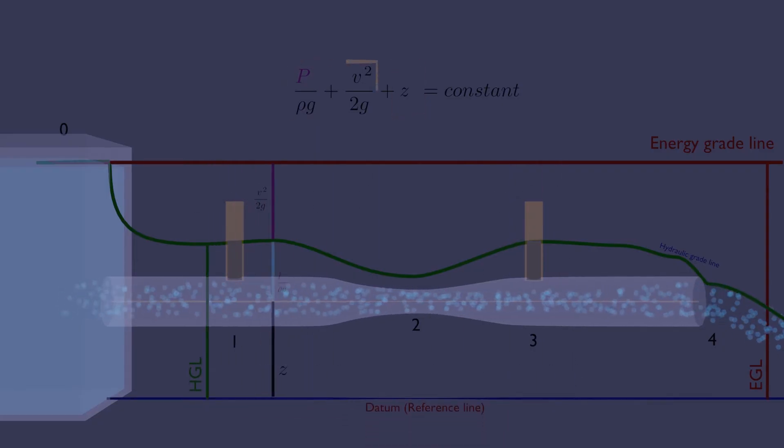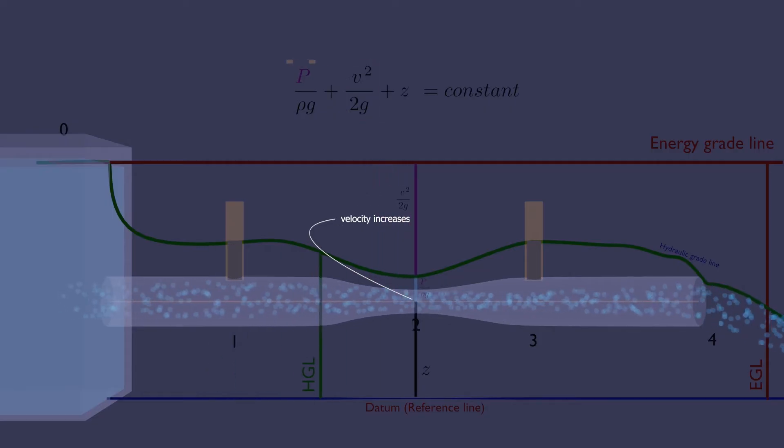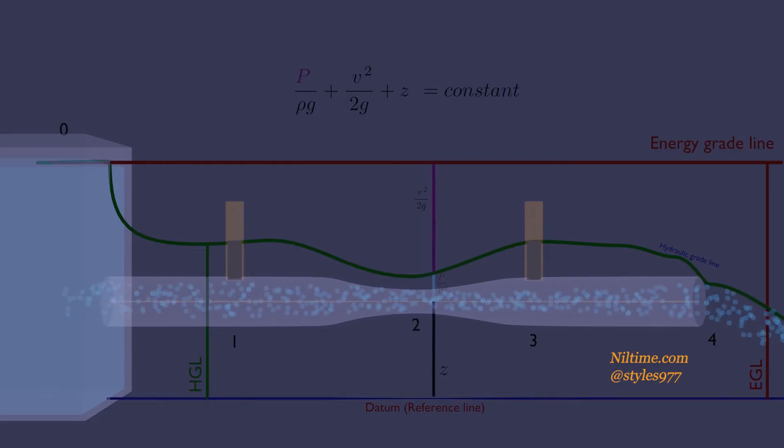Velocity of water increases at point two, so HGL decreases and velocity head increases. Then along the length of the pipe, the HGL increases as the velocity decreases.